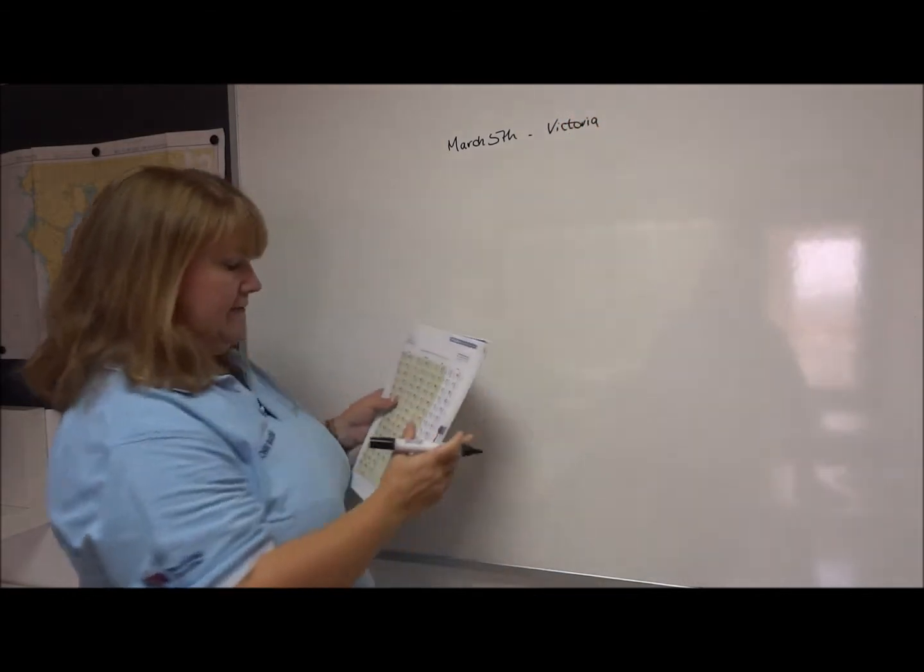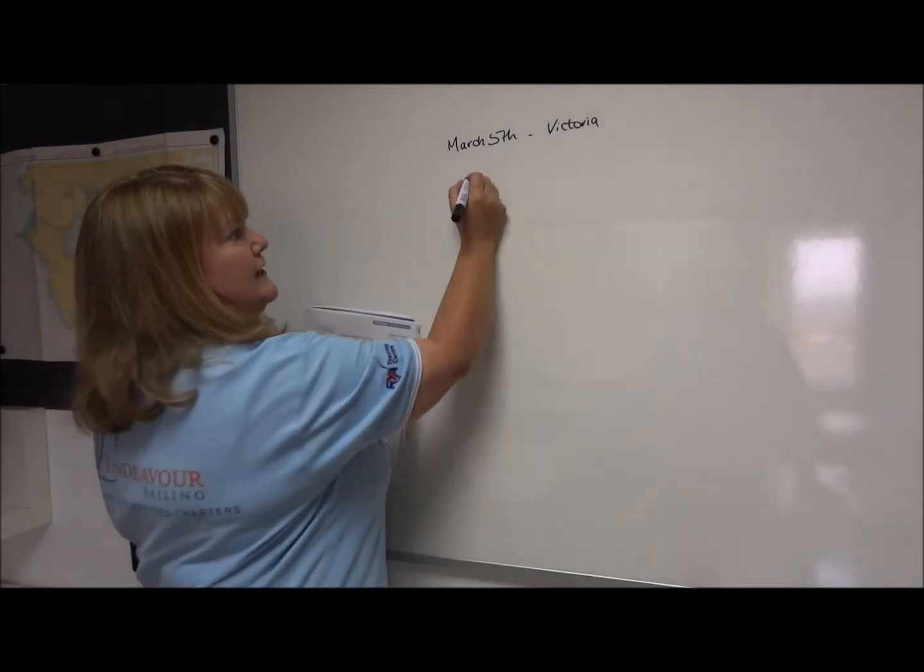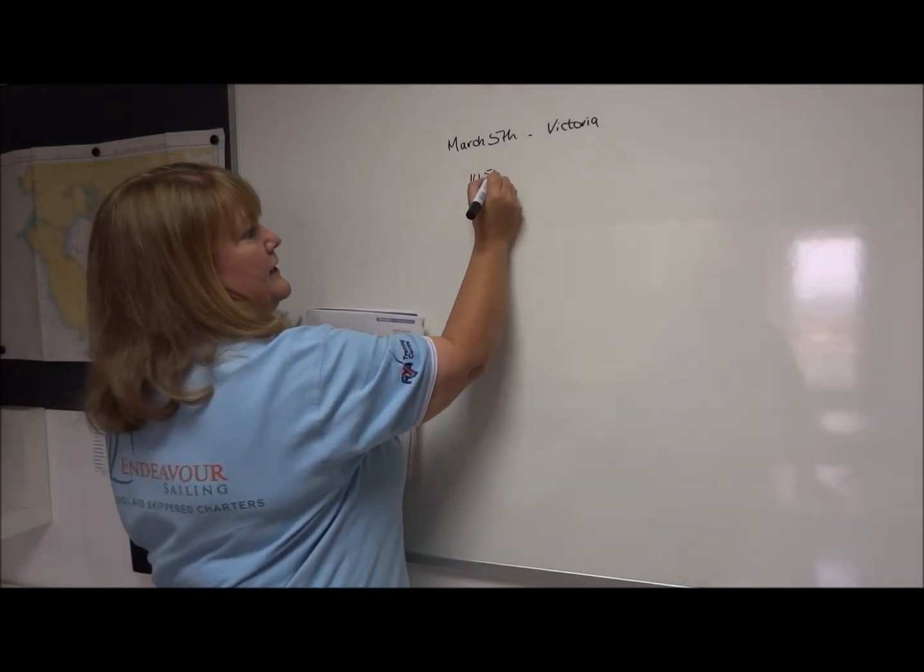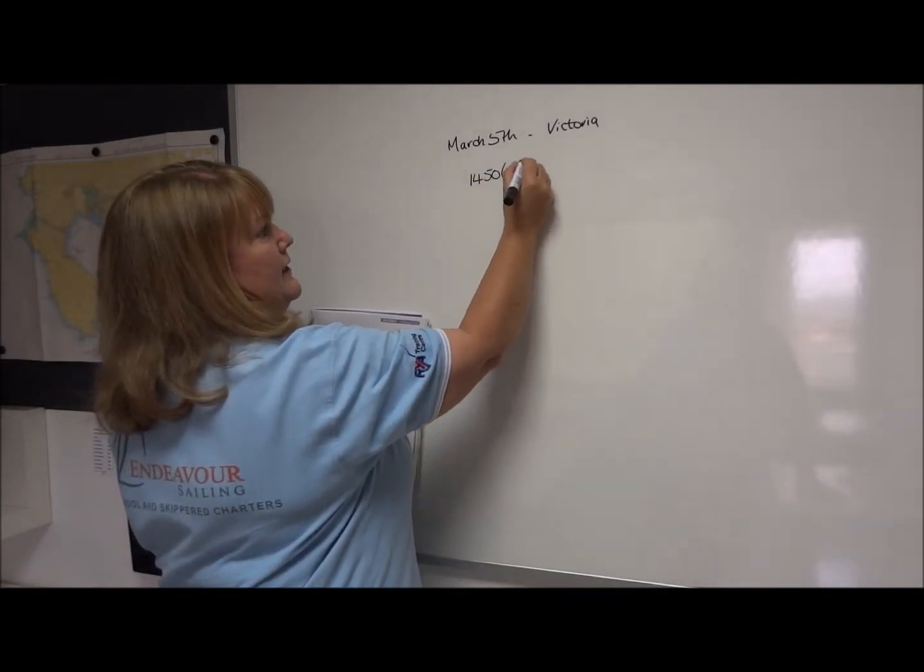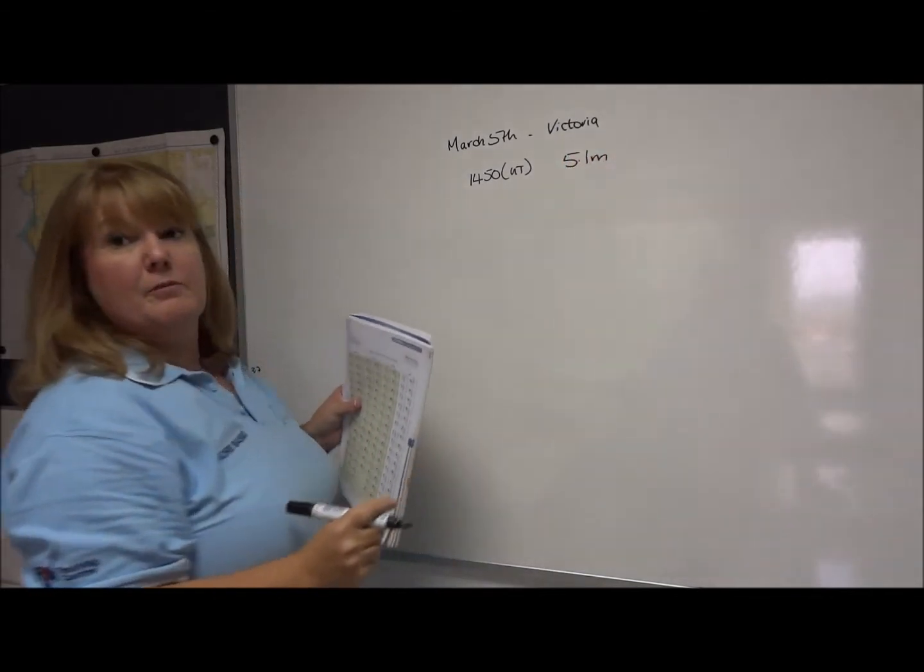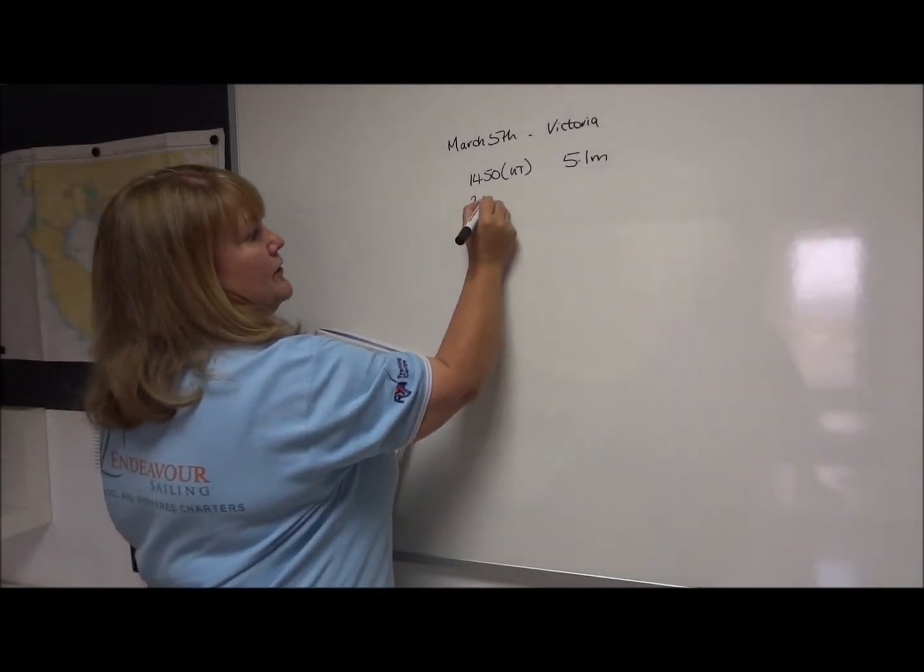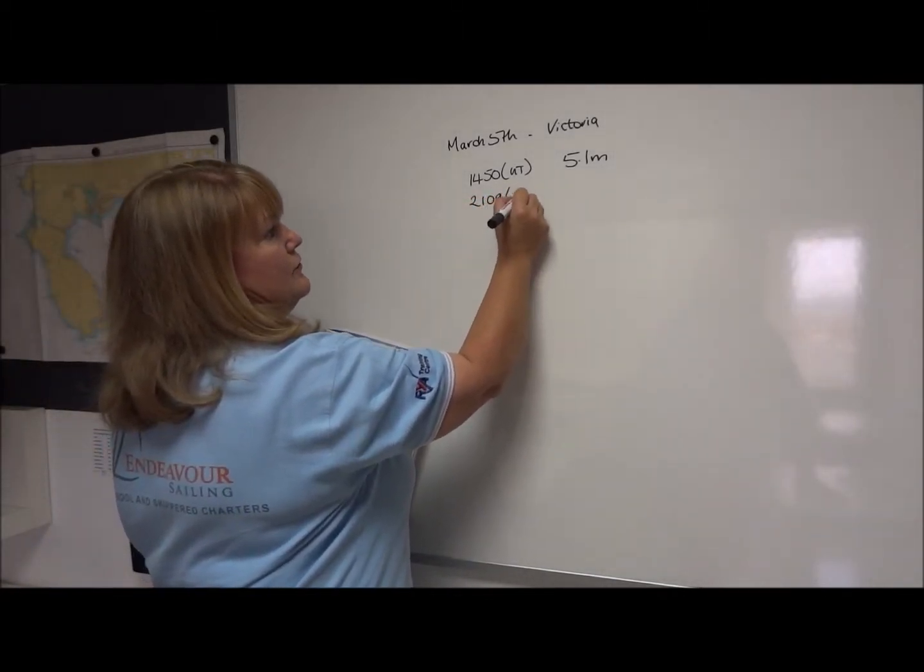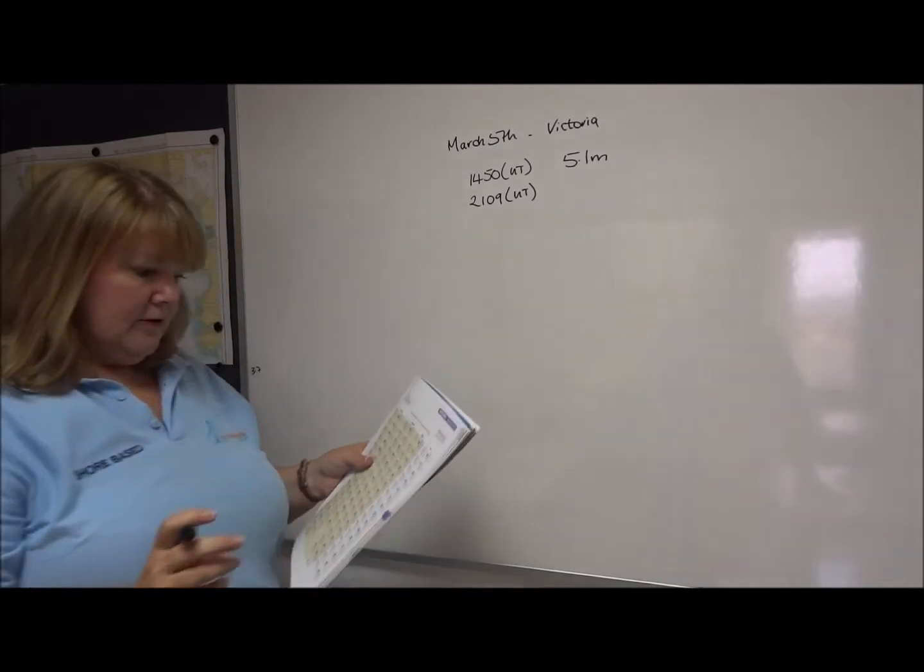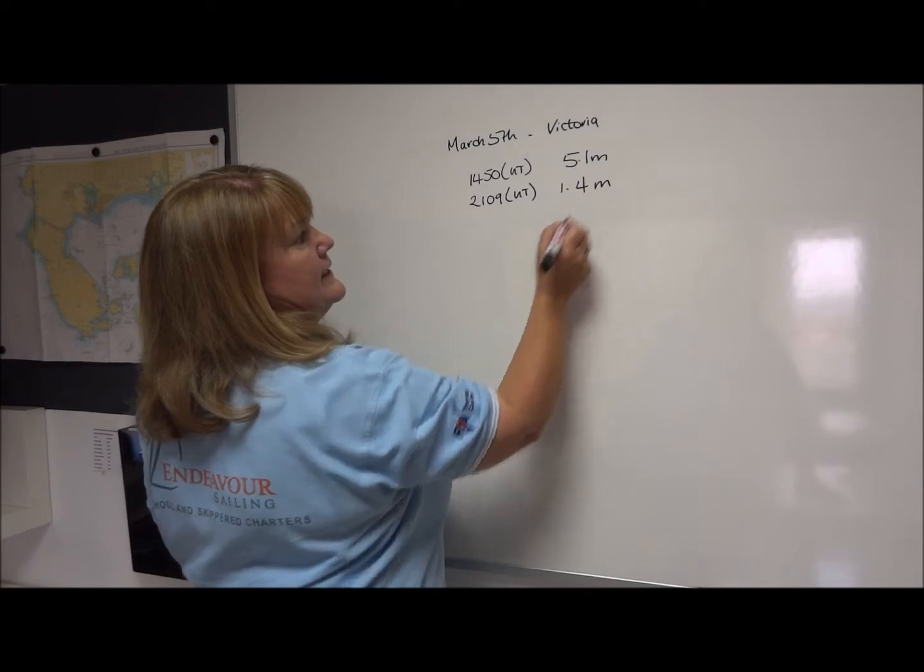On March the 5th we have in the afternoon at 1450 UT high water which is 5.1 metres. At 2109 UT we have low water which is 1.4 metres.